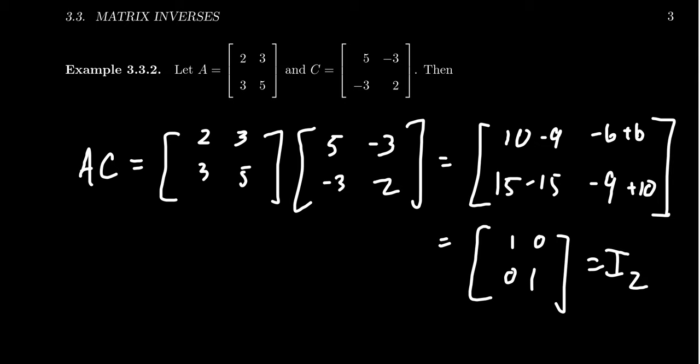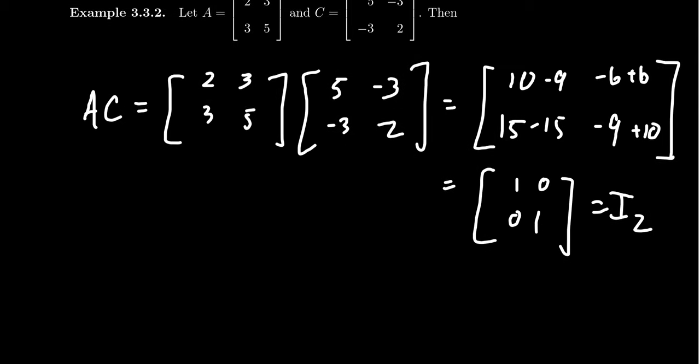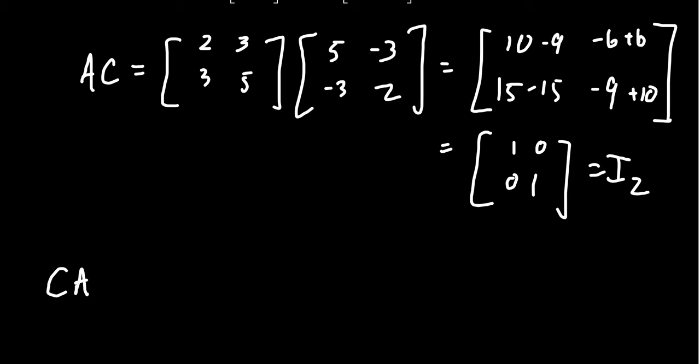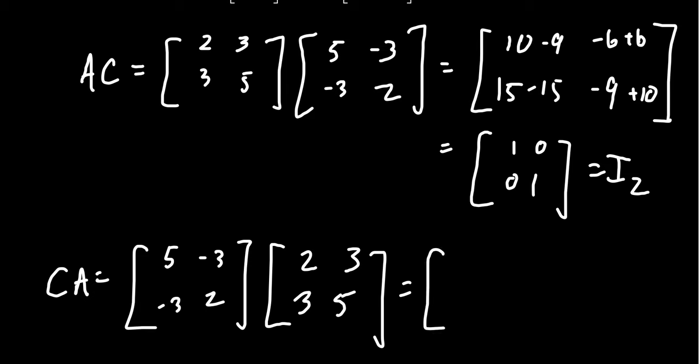So this shows us that A times C is equal to the identity. Now, to be an inverse, we need to check the other way around, right? C times A. If we take [5, -3; -3, 2] and you multiply that by [2, 3; 3, 5]: First row, first column, you're going to get 10 minus 9, which is 1. The first row, second column, you're going to get 15 minus 15, which is 0. The second row, first column, you get -6 plus 6, which is 0. And then lastly, second row, second column, you're going to get -9 plus 10, which is the 2 by 2 identity once again.